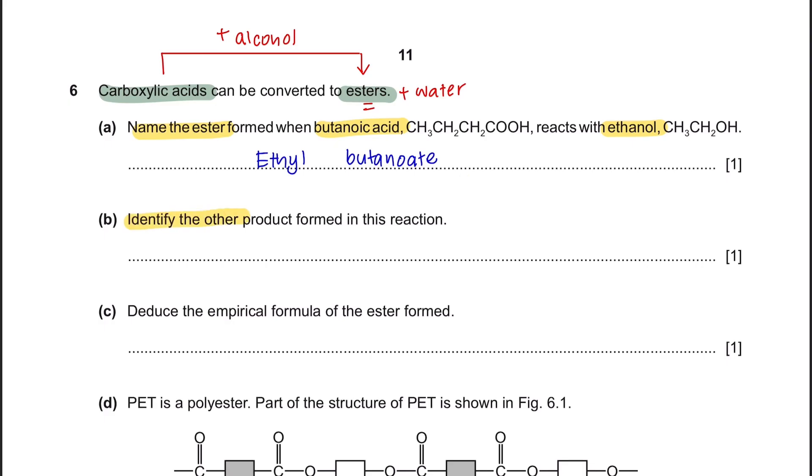Question B: Identify the other product formed in this reaction. So your other product here is water. Question C: Deduce the empirical formula of the ester formed. Empirical formula would be your simplest ratio of the compound formed. And the compound formed here is ethyl butanoate.